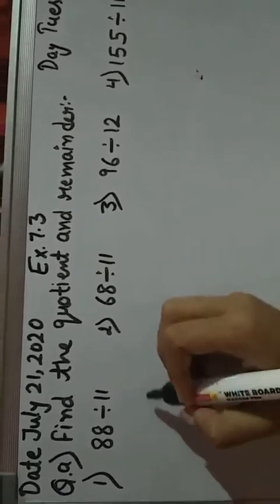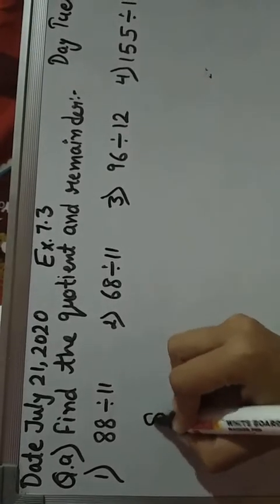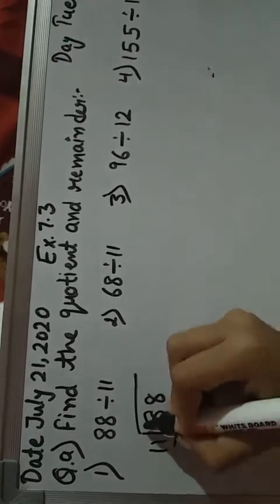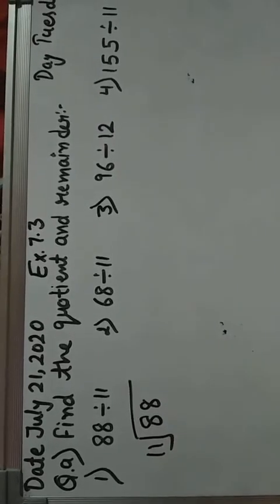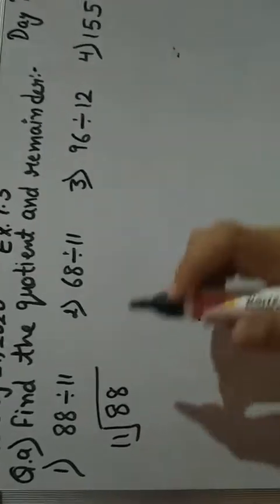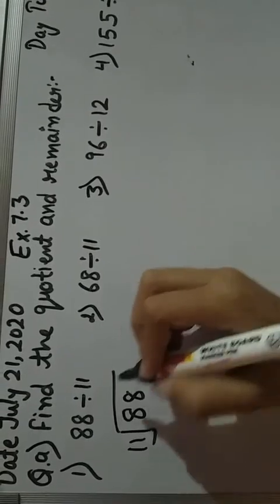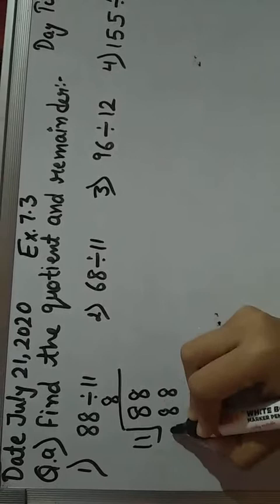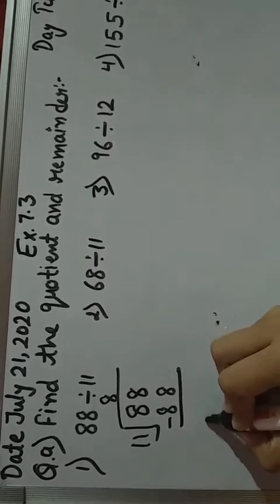Same we will write here: 88 divided by 11. Check your 11's table. 11 times 8 is 88.